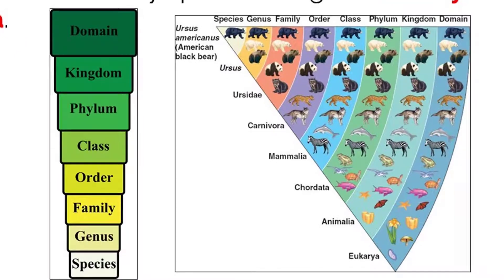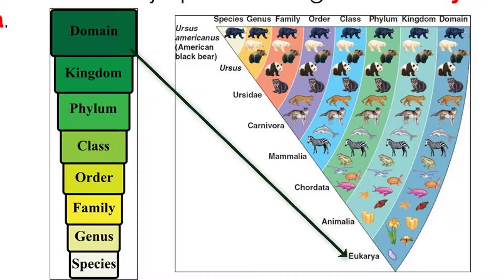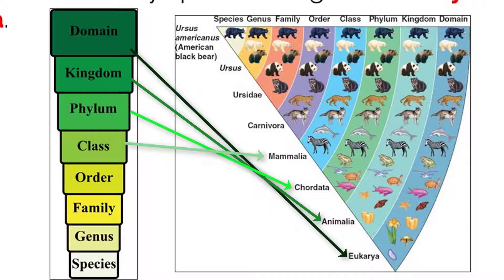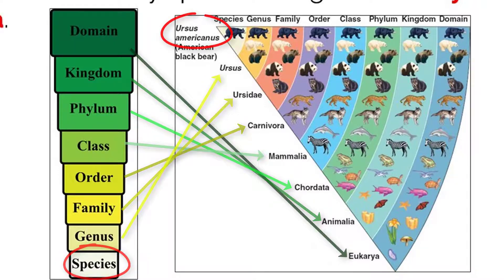Let's look at this sample, which shows the classification of Ursus americanus. Starting with the broadest classification, the American black bear is in the eukarya domain. Then it moves down to be classified in the animal kingdom. The phylum is Chordata, the class is Mammalia, the order is Carnivora, the family is Ursidae, the genus is Ursus, and the species is Ursus americanus.